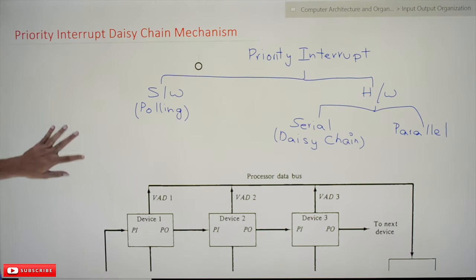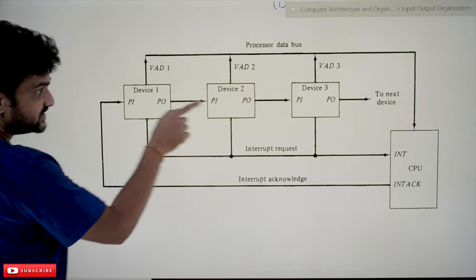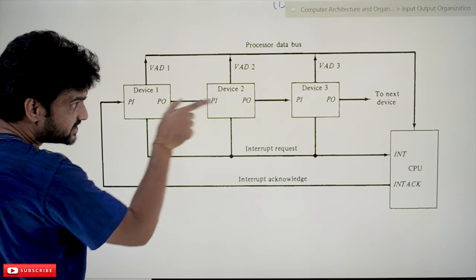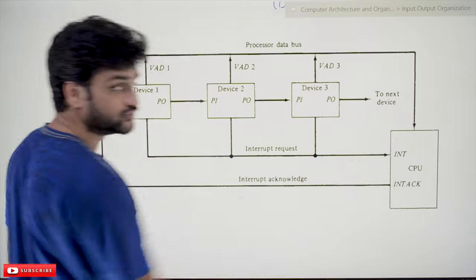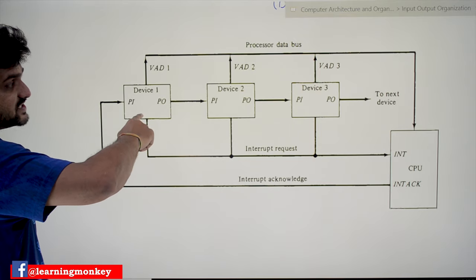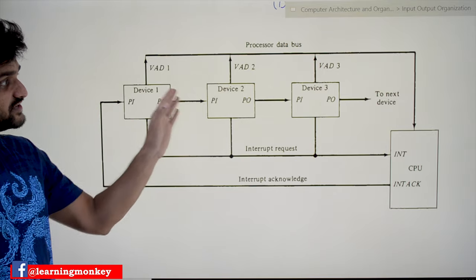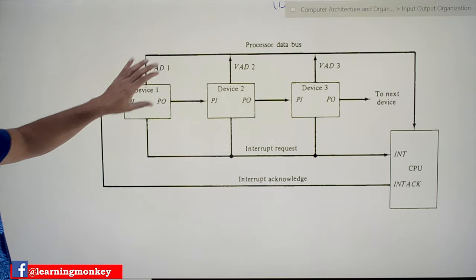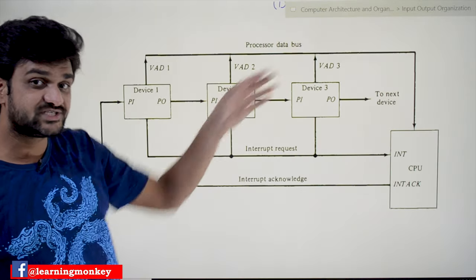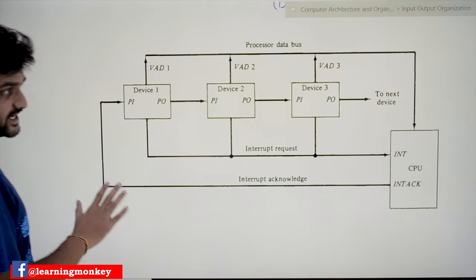This is the hardware for the Daisy Chain mechanism. These are the devices — Device 1, 2, 3 — and these devices are connected serially onto a single line to the CPU. The chain starts from the highest priority device and moves on; as we move along the chain, devices have lower priority. The highest priority device is at one end, and the least priority device is at the far other end of the chain.